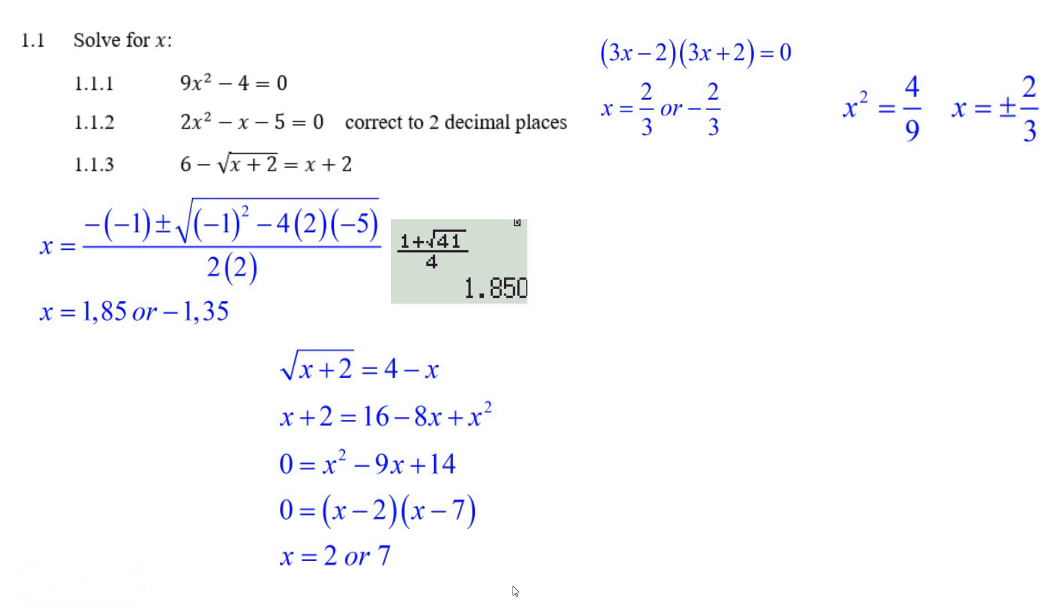And a lot of people leave it there, and they leave out the two marks where you're supposed to check and see if these solutions actually work. Well, if you put in 7 in there, you'll get the square root of 3 equals negative 3. And that's not true. So it doesn't work. So 7 doesn't work.